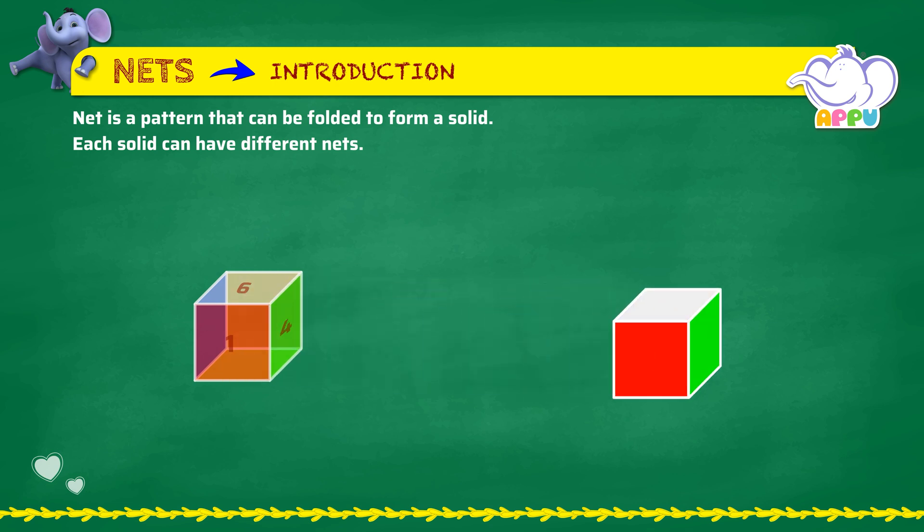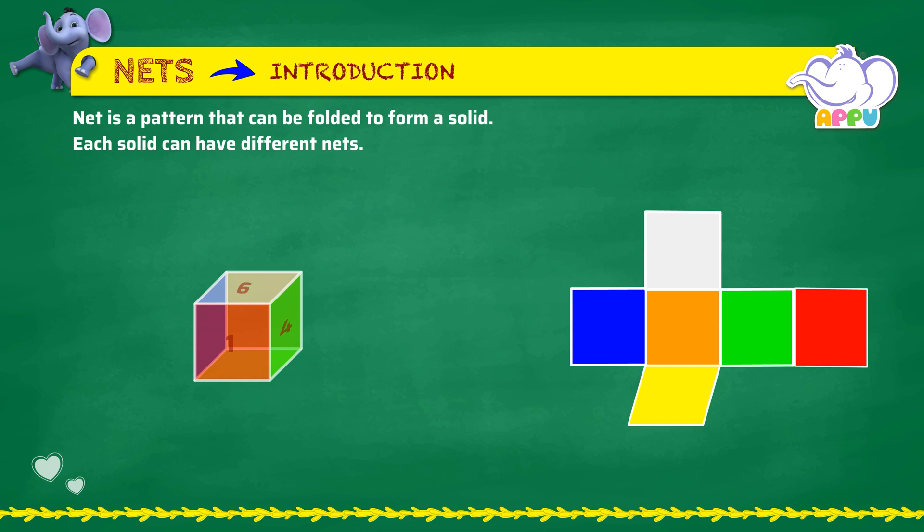When you unfold a cube, you get the net for the cube. When you fold the net along the lines, you get the cube. Here are a few more nets for a cube.